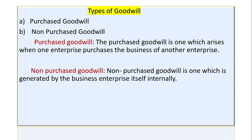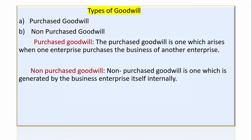These are the types of goodwill: purchased goodwill and non-purchased goodwill. Purchased goodwill is when one enterprise acquires another business enterprise and pays a value for it — that value is known as purchased goodwill. Non-purchased goodwill is when a company self-generates its own goodwill value.